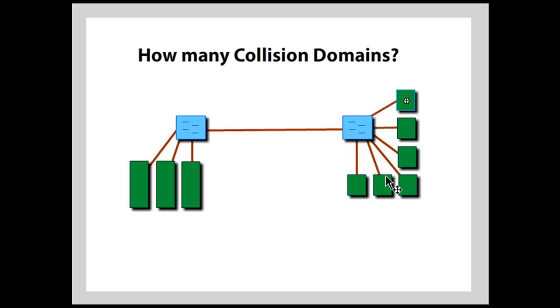So to answer this question, how many collision domains, in this type of diagram, you would just count all the links to the switch. So you'd have one, two, three, four, five, six. And then this is a collision domain between the switches. So that's seven and then eight, nine, ten. So the answer to that question in this diagram would be ten collision domains.